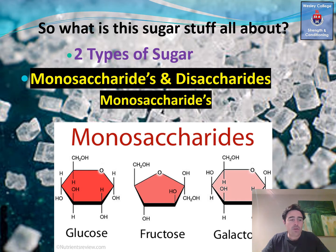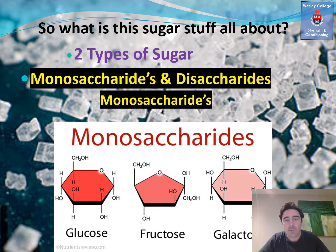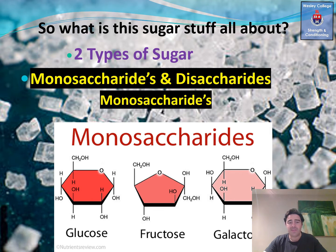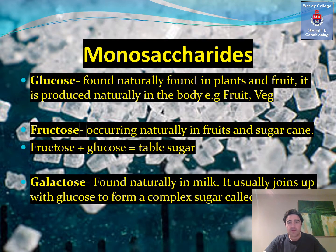Sugar is a carbohydrate and it's found naturally in most plants or grains. There are two types of sugars: the first is a monosaccharide and the second is a disaccharide. Monosaccharides are referred to as simple sugars and they consist of glucose, fructose, and galactose. Glucose is naturally found in plants and fruits.